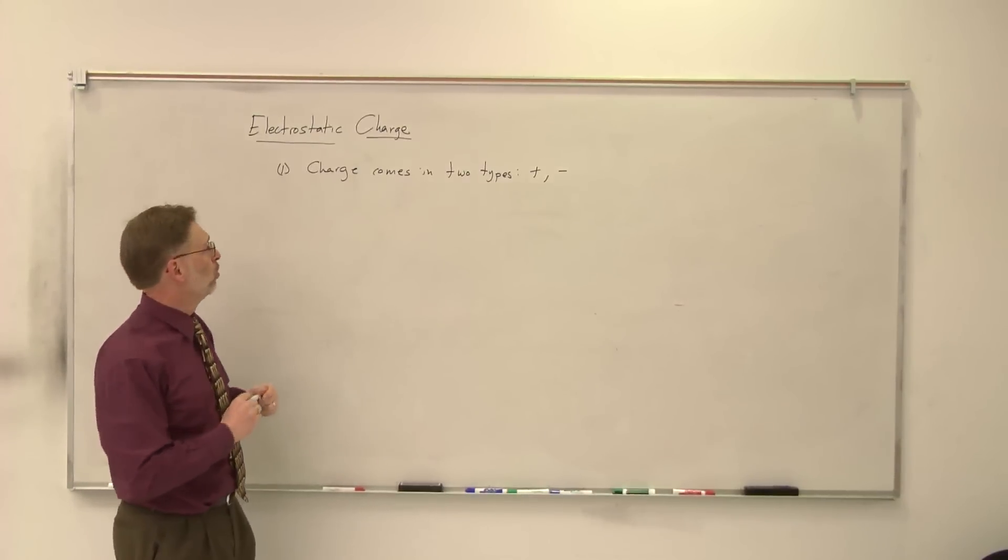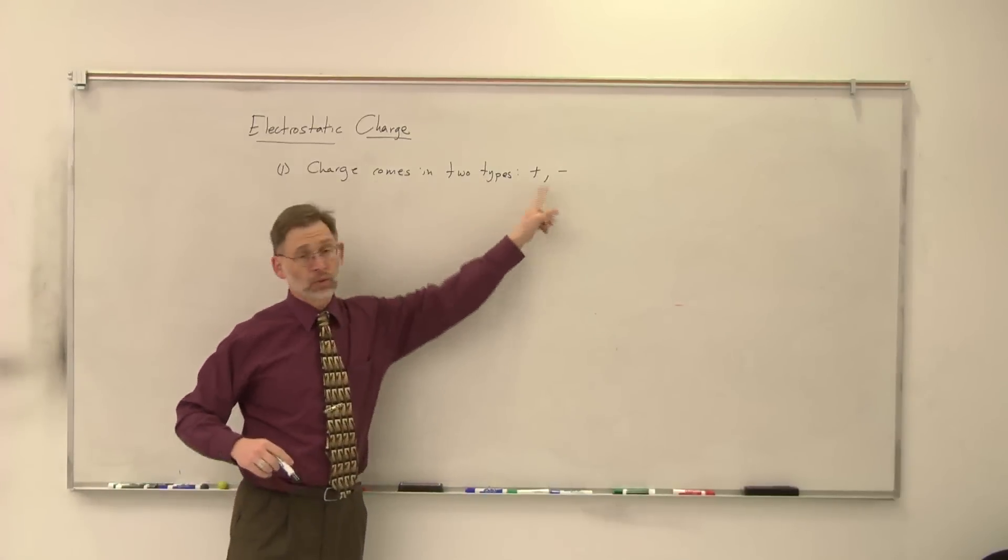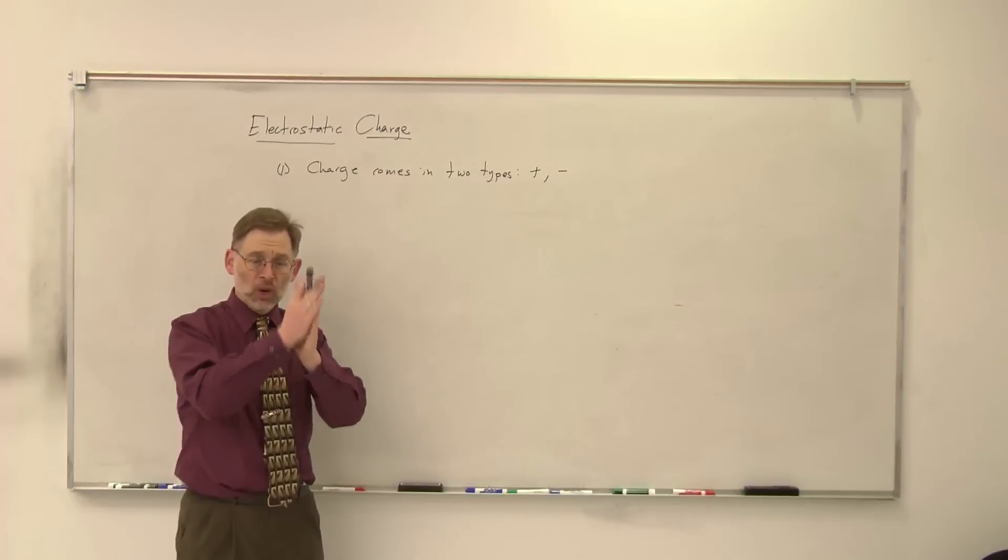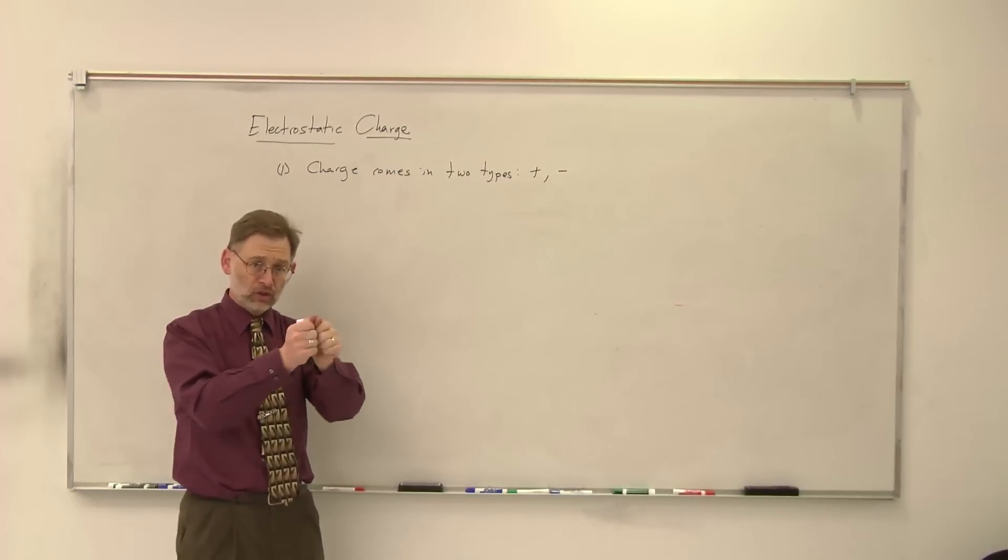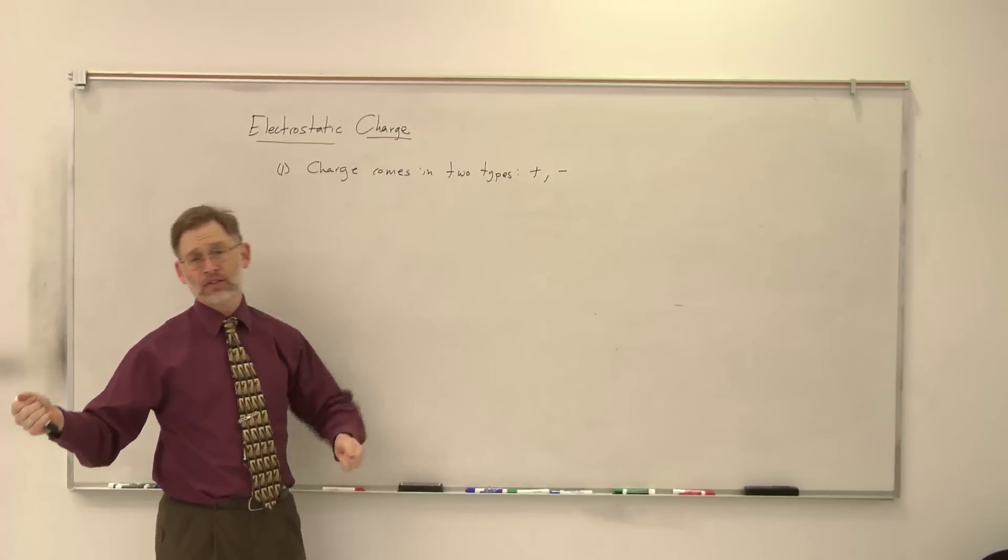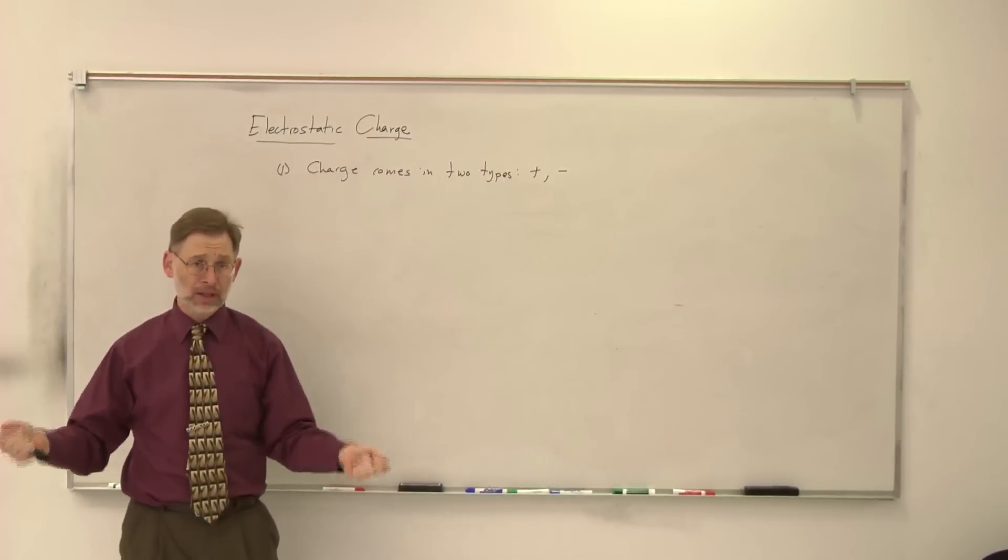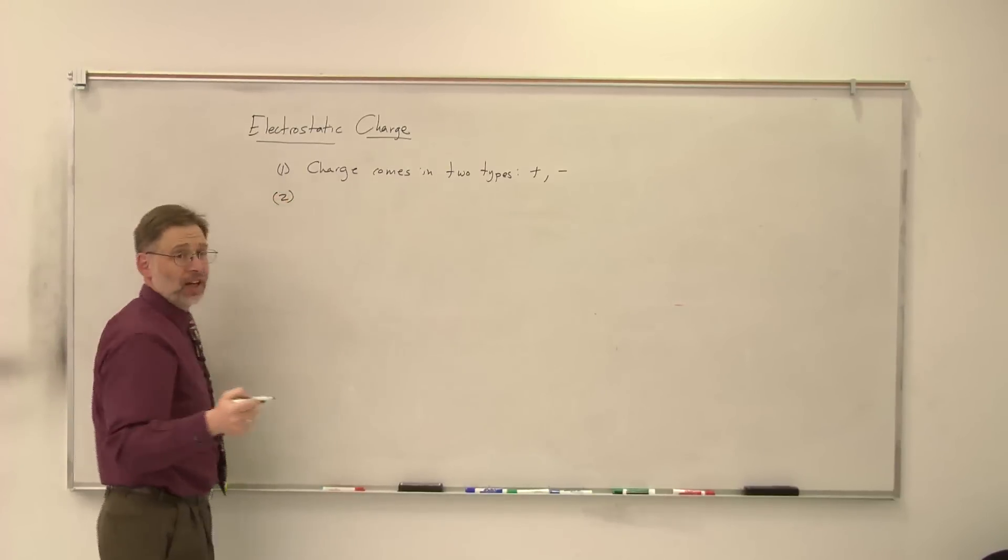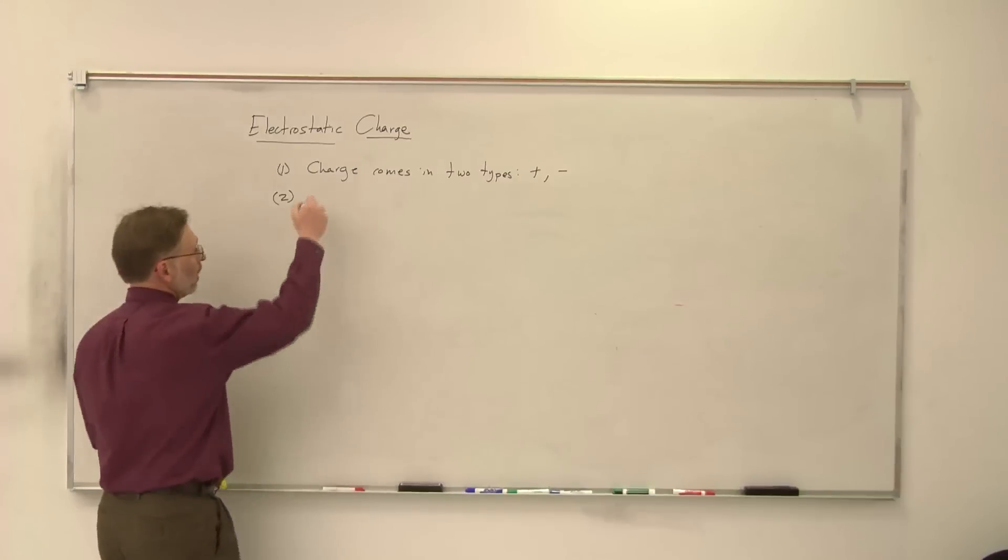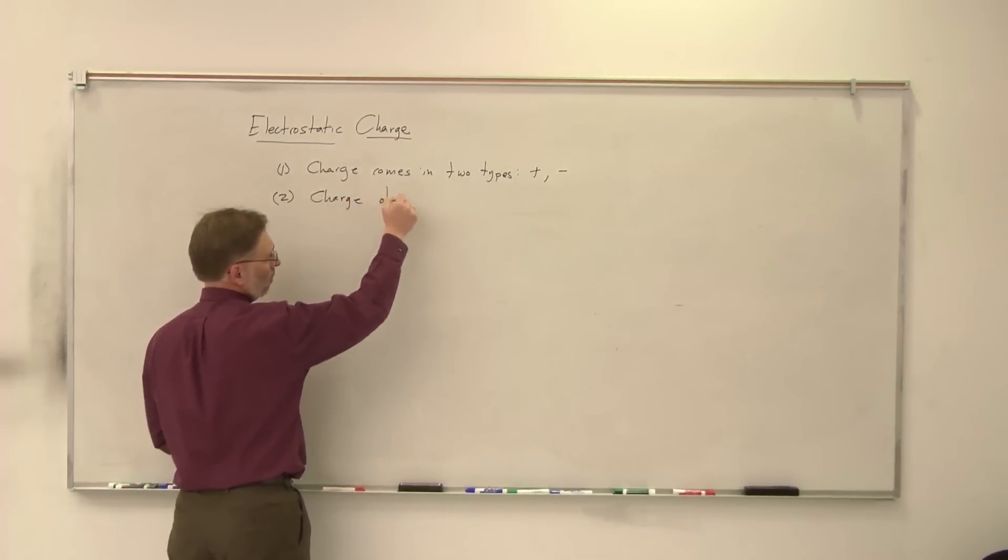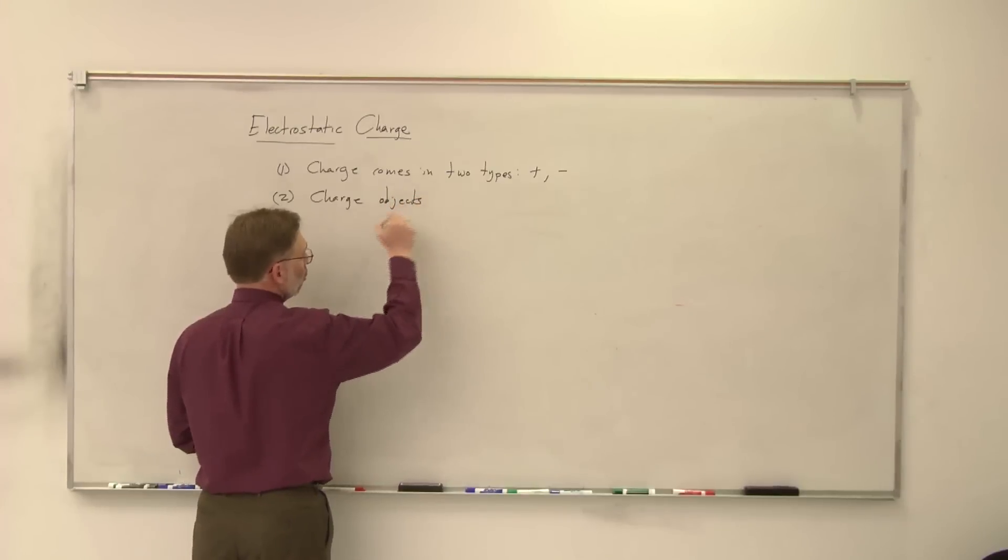And by the way, one of the easiest ways to produce charged objects where you can see different types of charges is to take two pieces of scotch tape, put them together, make sure they're electrically neutral, and then tear them apart, and you'll actually, one tape will be a positively charged tape, the other tape will be a negatively charged tape.